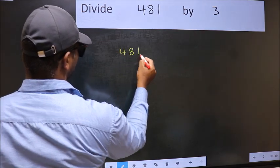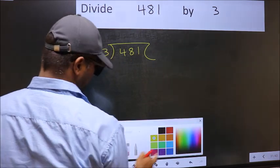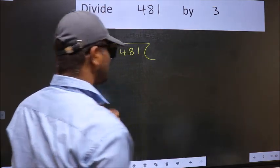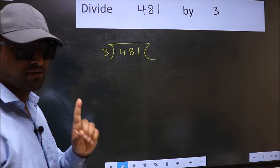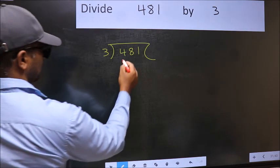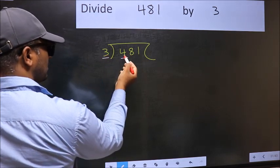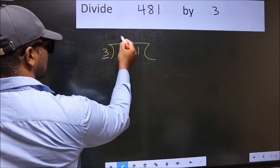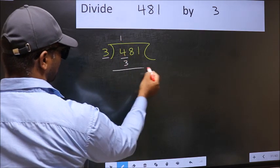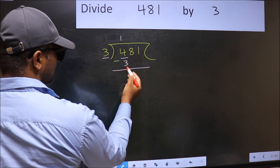481, 3 here. This is your step 1. Next, here we have 4 and here 3. A number close to 4 in 3 table is 3 times 1 is 3. Now you should subtract. 4 minus 3, 1.